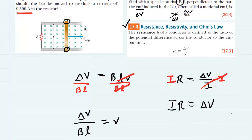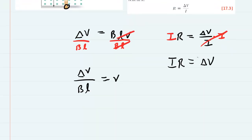So this is going to allow us to make a substitution. We're going to take the quantity IR, since it equals delta V, and substitute it into our equation from earlier in the numerator, because that is where delta V resides. So now we have IR divided by BL is equal to the speed.